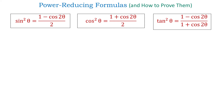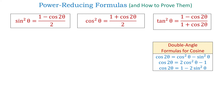To prove these identities, let's recall the three forms of the double-angle formula for cosine. So, here we have them. To prove the first power-reducing formula, we will take the third form and solve it for sin squared of theta.